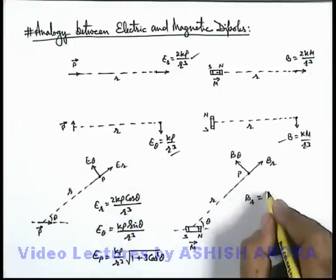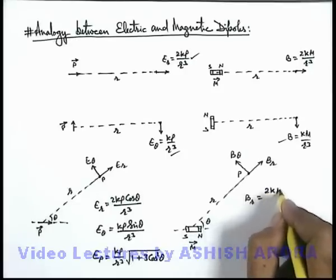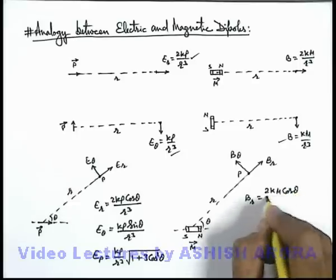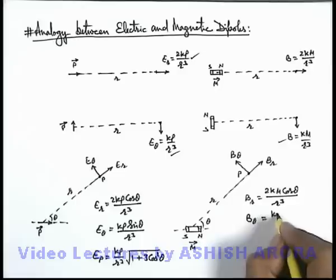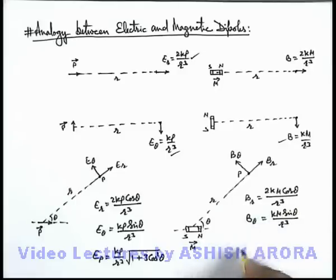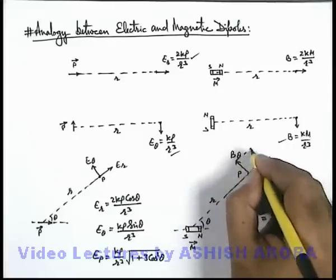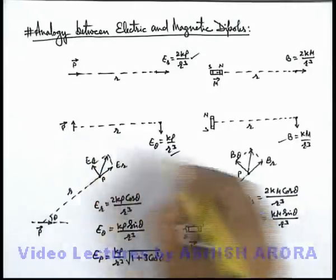By this analogy, here Br we can write as 2km cos θ/r³, and the value of transverse magnetic induction is km sin θ/r³. And the resultant magnetic induction at point P, which is a vector sum of these 2, just like the case we have done over here, we can use it, and this will be km/r³ times the square root of 1 plus 3 cos² θ. This result we can use.